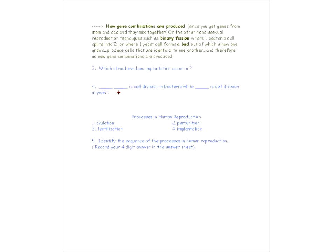Can you think of what would go in here — which one of the asexual types of cell division takes place in bacteria, and which takes place in yeast? With bacteria it would be binary fission, and with yeast it was budding. Does that make sense?